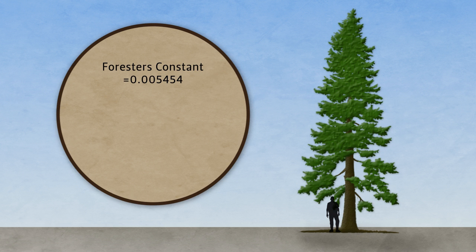This number, the Forester's Constant 0.005454, converts the measured diameter into square feet. This, in turn, modifies our area formula accordingly.